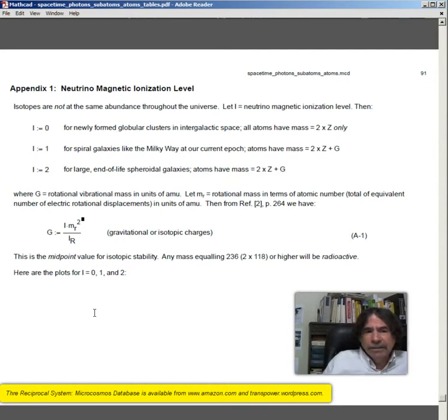I equals one. For spiral galaxies like the Milky Way at our current epoch, atoms have mass 2 times z plus g. I equals two for large endoblyceroidal galaxies. Atoms have mass 2 times z plus g.